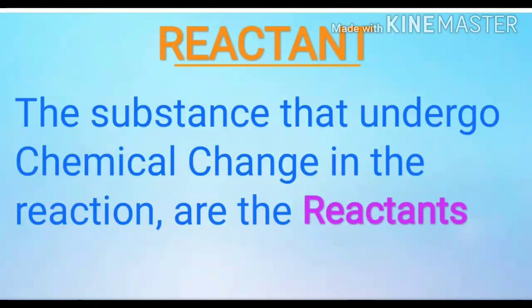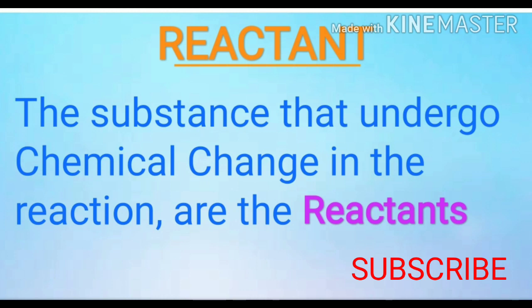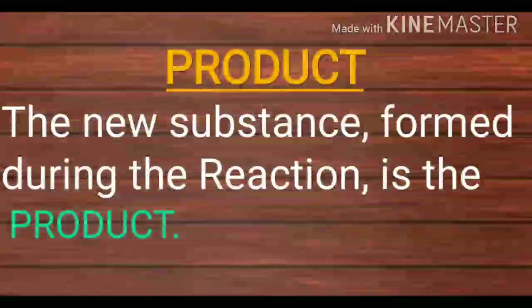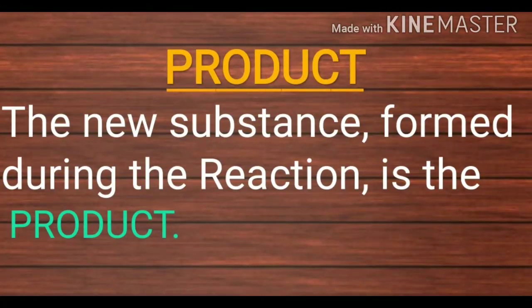First you should know what is a reactant and what is a product. Reactants are the substances that undergo chemical change in the reaction. For example, during the burning of magnesium ribbon, magnesium and oxygen are the reactants. The new substance formed during the reaction is the product. For example, when a magnesium ribbon is burnt in oxygen, it gets converted to magnesium oxide — magnesium oxide is the product here.